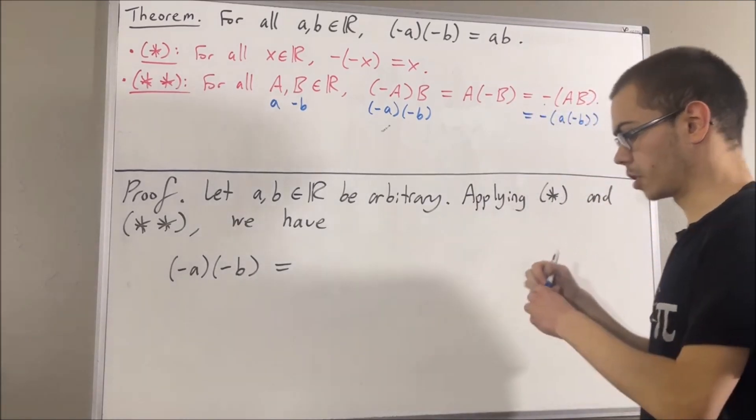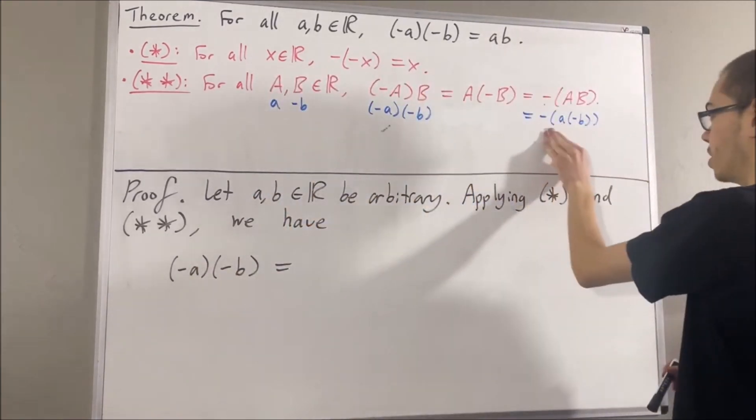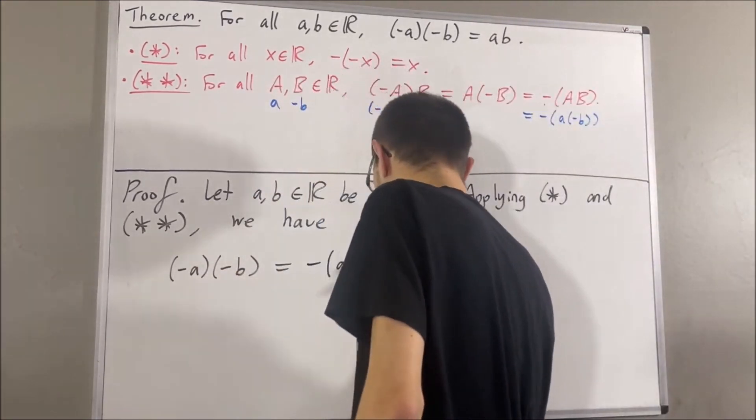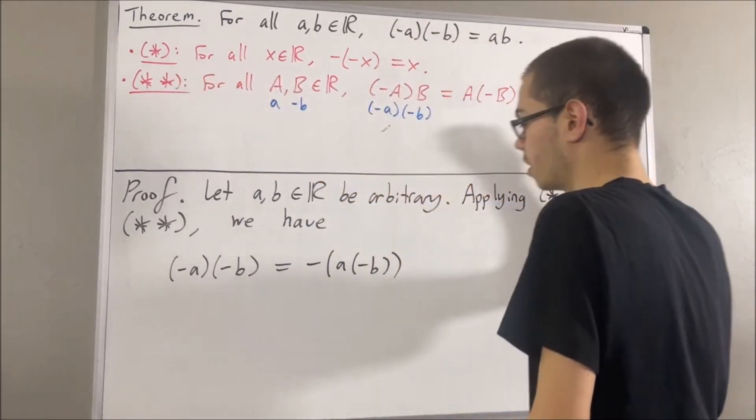Right? So, this guy must be equal to this guy. And then, if we apply star star again, well, in this case, we're going to take capital A to be A, and take capital B to be B.